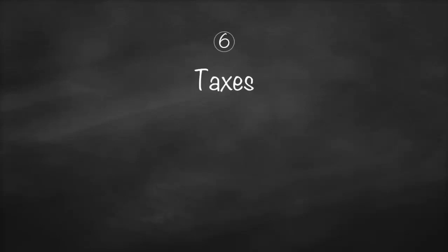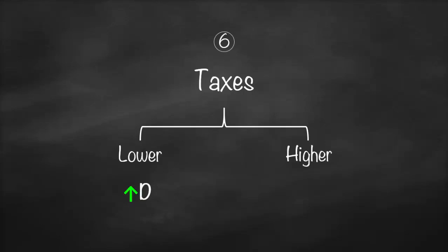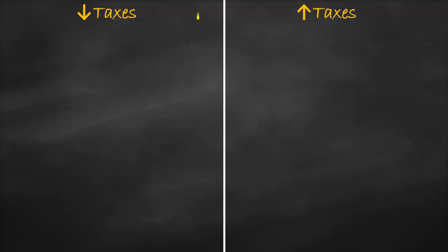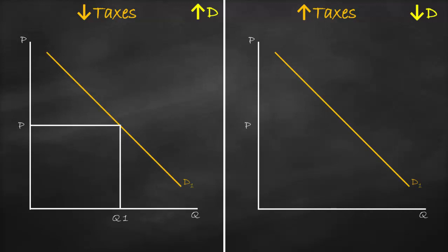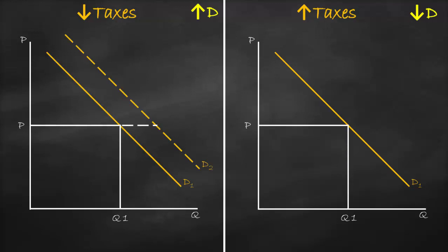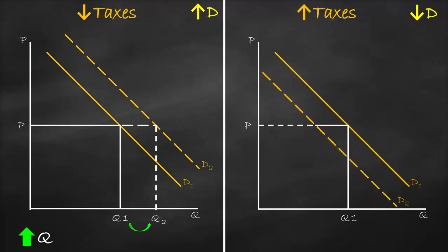Another factor is taxes. Lower taxes mean people pay less, so disposable income is higher and they consume more — demand increases and the curve shifts right to D2, giving higher quantity. Higher taxes reduce disposable income and lower demand — the curve shifts left, giving a lower quantity demanded at the same price.